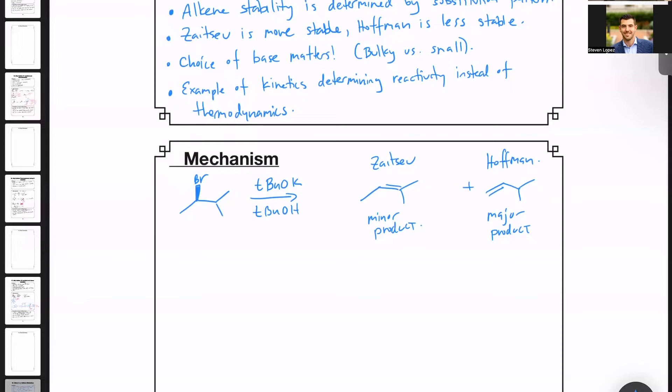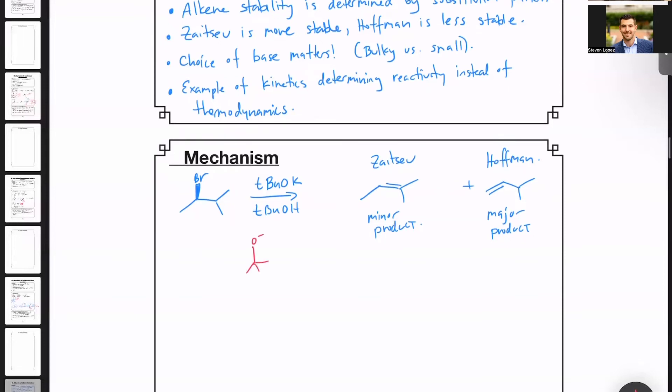Let me show you that reaction mechanism. So the base is this molecule here, tert-butoxide, and it has two choices when deprotonating this molecule.